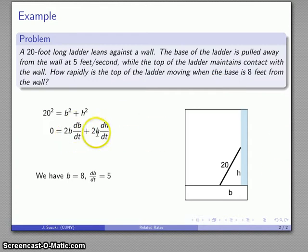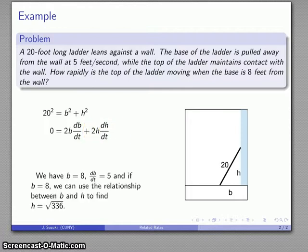I am looking for, I am interested in how rapidly the top of the ladder is moving so I want to know this dh/dt. So I need to know h. Well if I know that b is 8 then I can use this original relationship between b and h to figure out what h is.